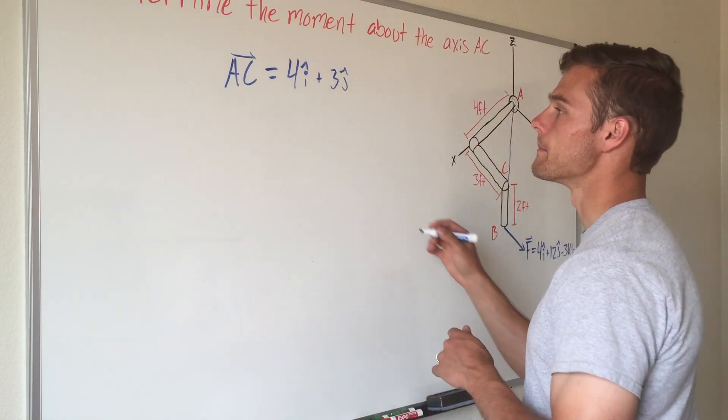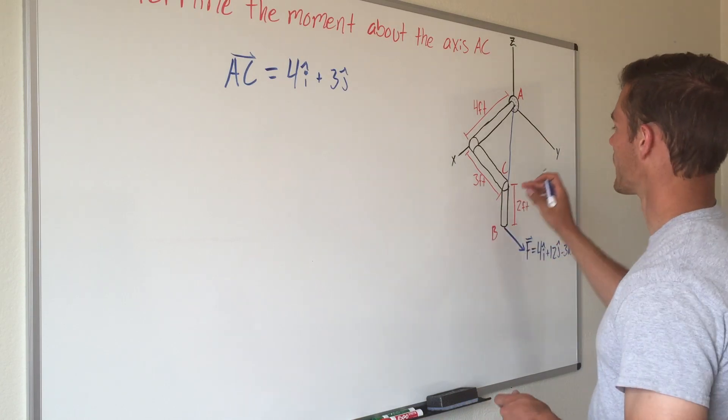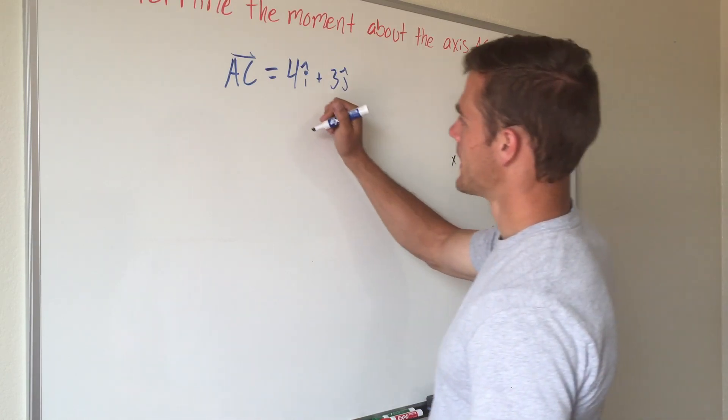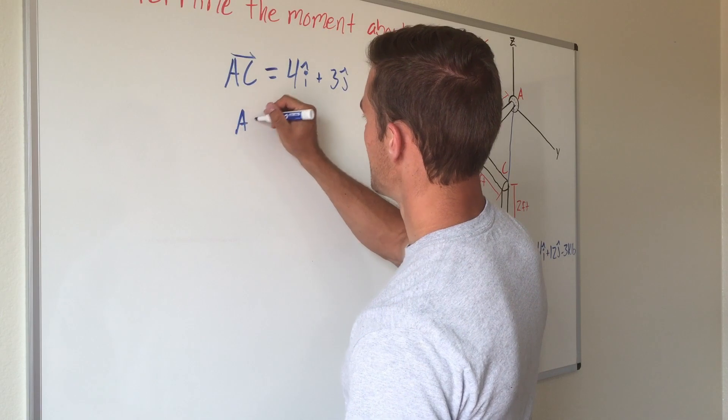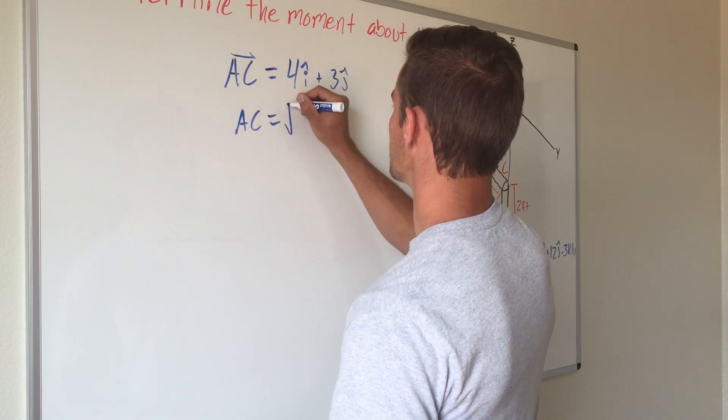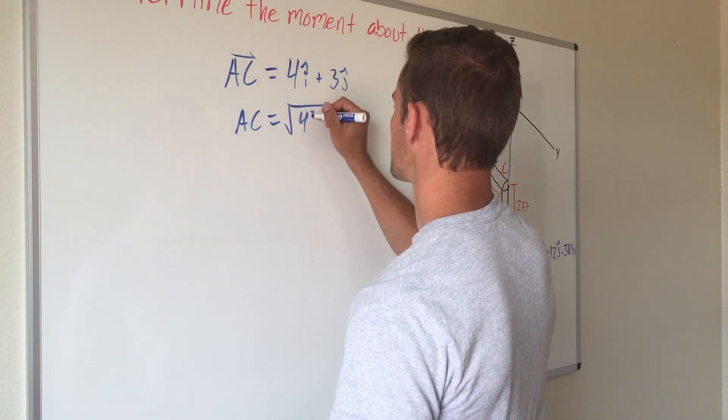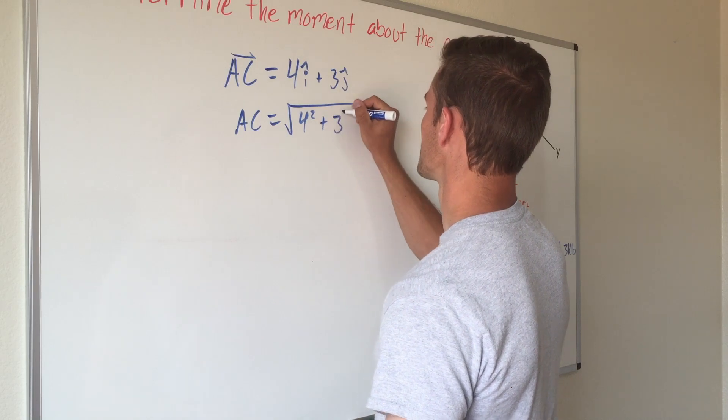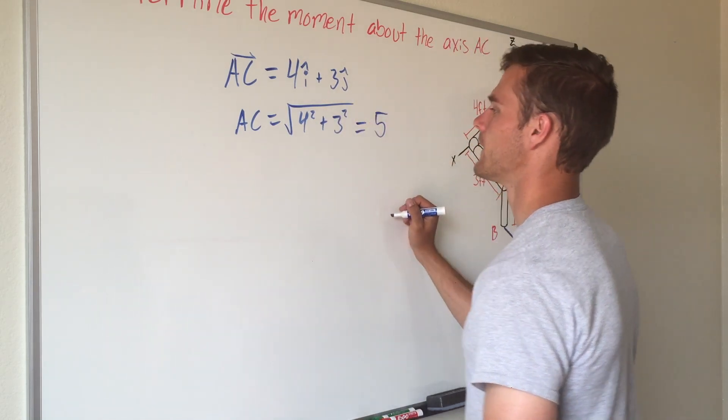Now we want to find the magnitude of this vector, or in other words the length of this line. That will be AC equals the square root of 4 squared plus 3 squared, and that will equal 5.